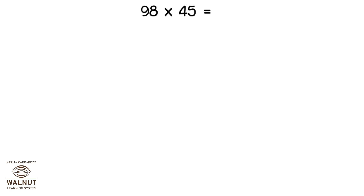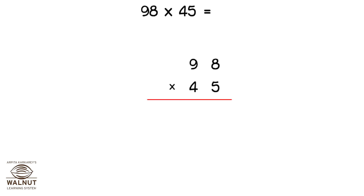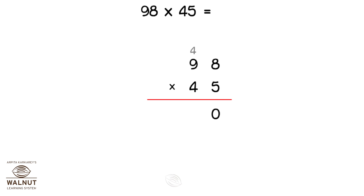Let's try one more. We write the numbers properly one below the other. Look carefully at what happens when we multiply and get a two-digit number. We write the 4 on top of the next number and 0 below the line. Then we do 5 into 9 — that is 45.